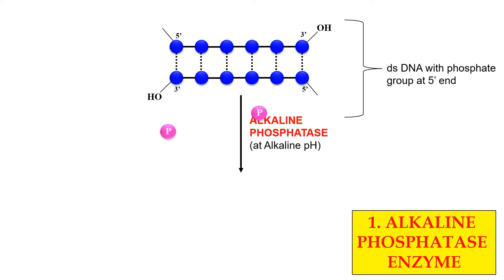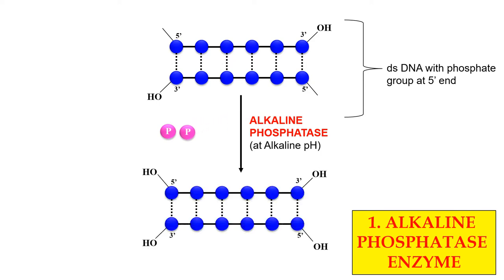After the removal of the phosphate group, the product will have no phosphate, because Alkaline Phosphatase Enzymes have removed all the phosphate. It works under alkaline condition, that is why it is named as Alkaline Phosphatase.